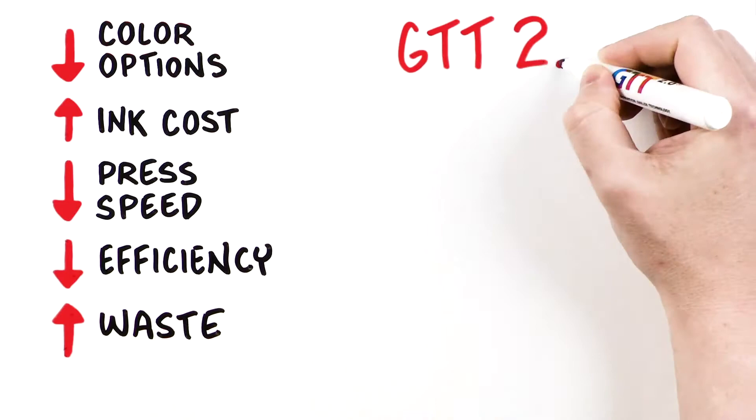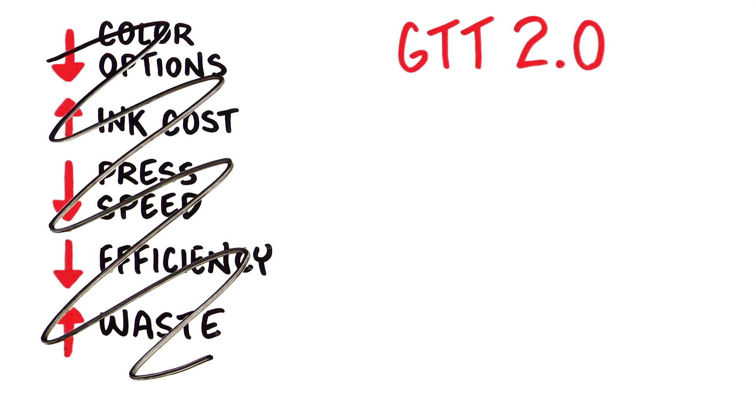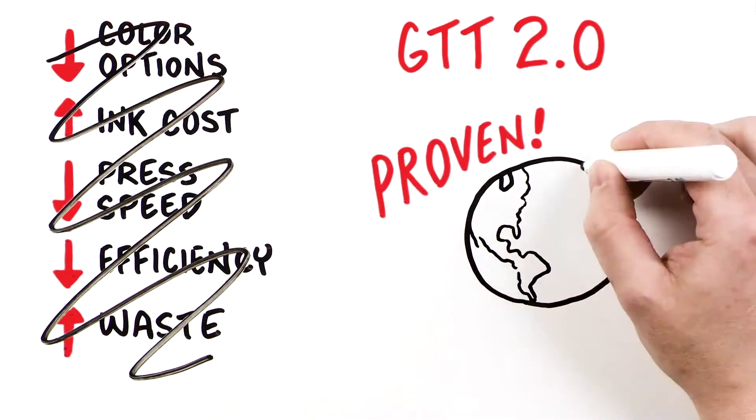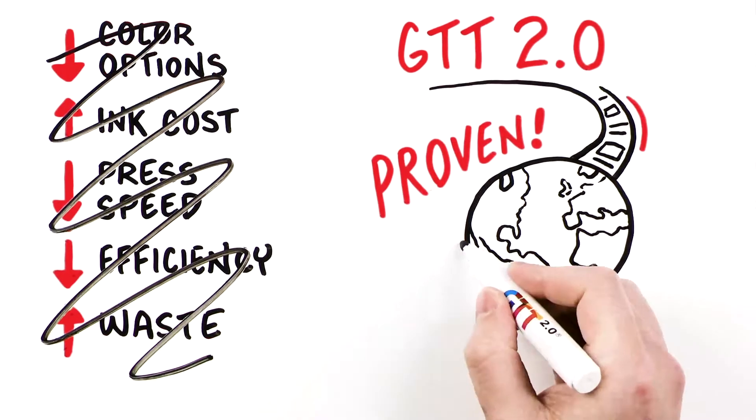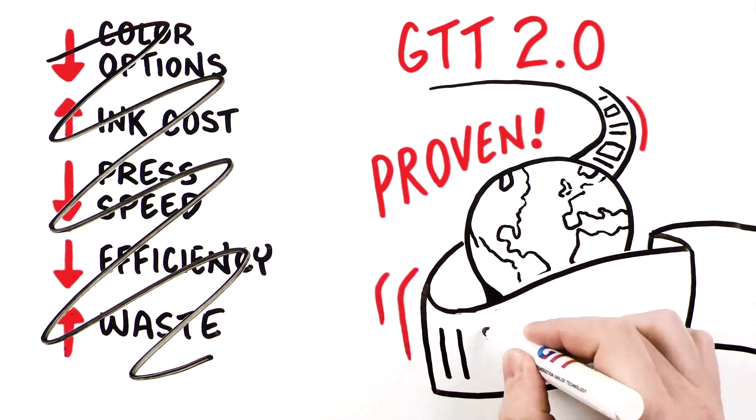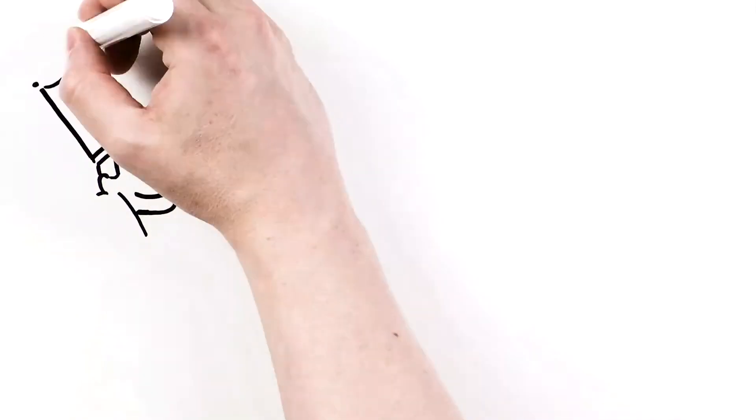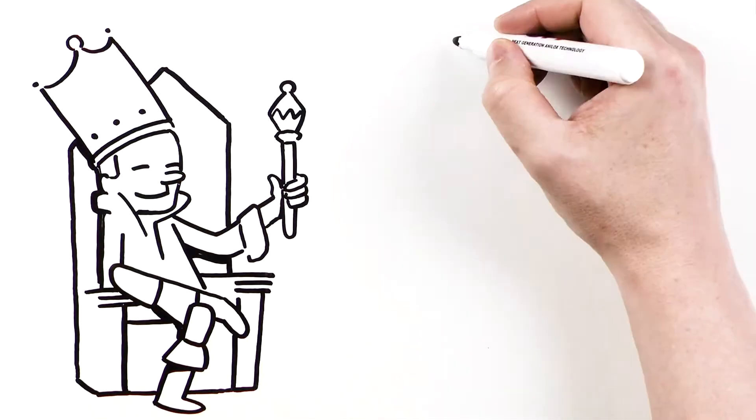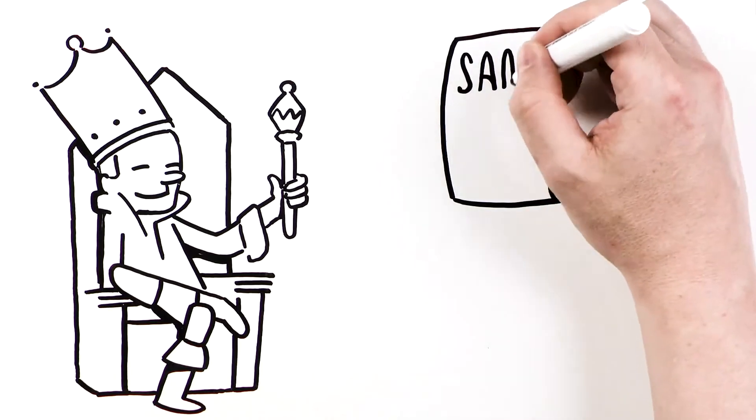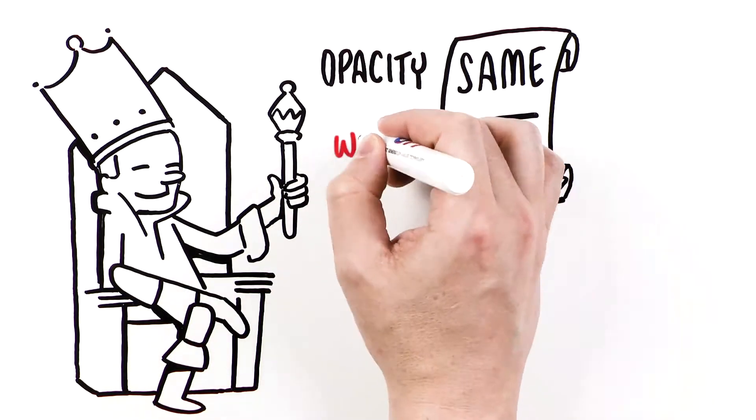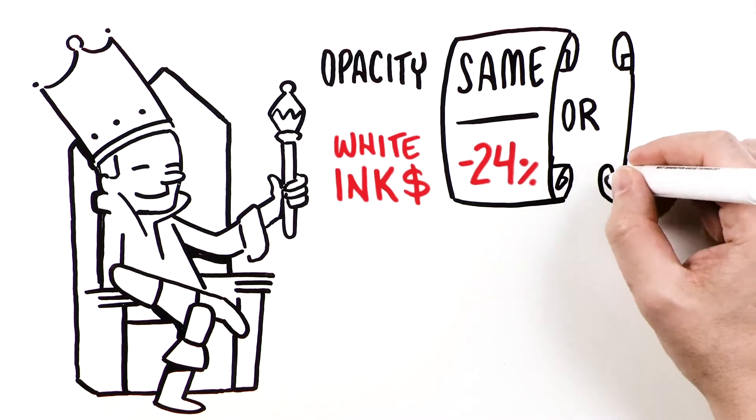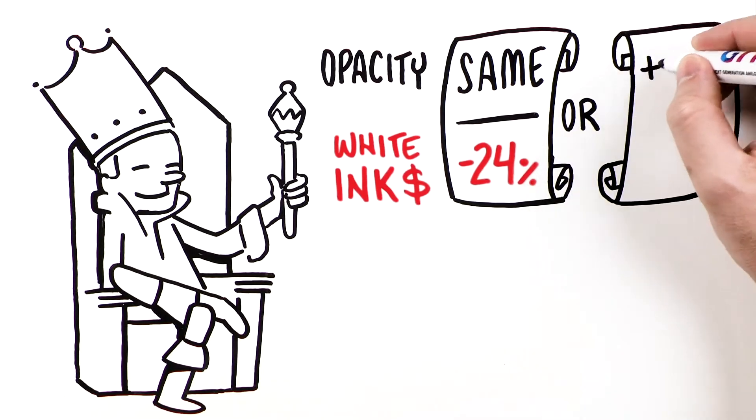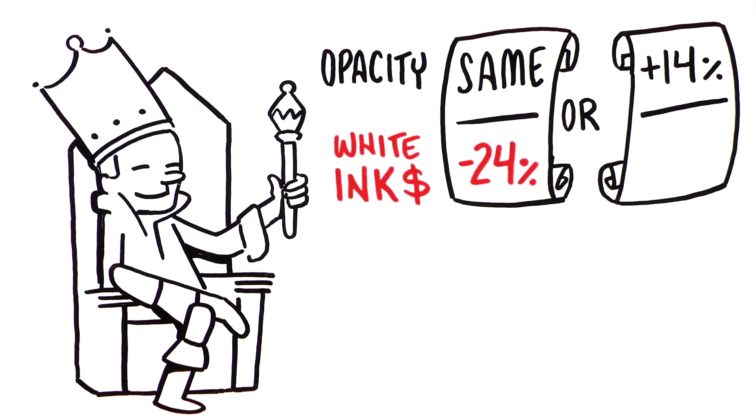The new GTT 2.0 eliminates such trade-offs and is already proven in real production orders with run lengths of over 160,000 linear print meters. GTT 2.0 offers printers the enviable options of achieving the same opacity with the benefit of up to 24% white ink savings, or increasing the opacity they currently achieve by up to 14%, improving print quality and blockout, and still saving up to 4% on white ink costs.